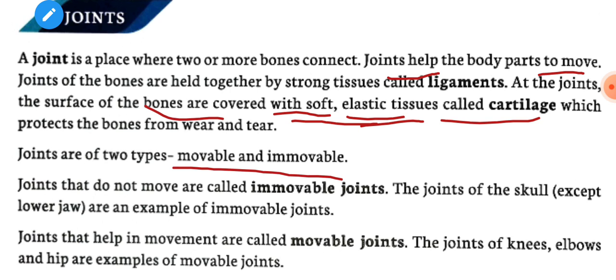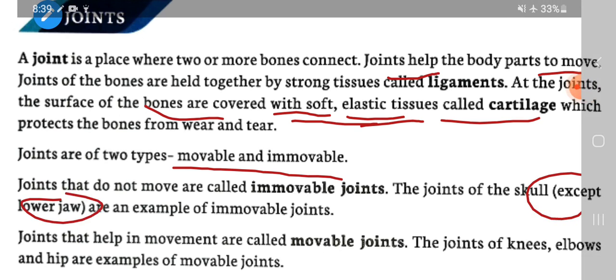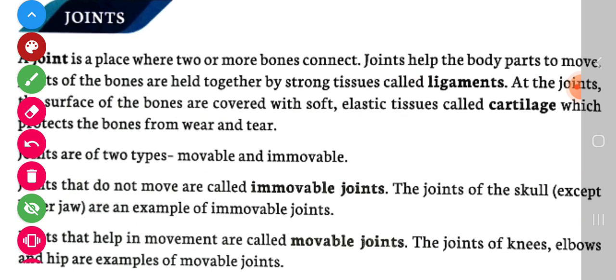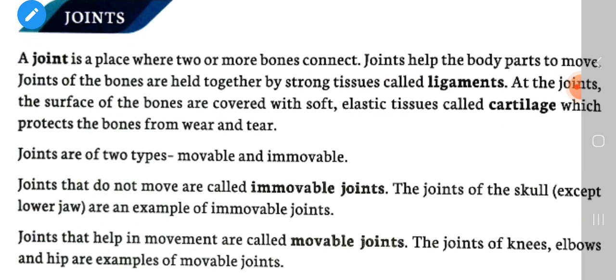Joints that do not move are called immovable joints. The joints of the skull, except the lower jaw, are an example of immovable joints. Joints that help in movement are called movable joints. The joints of knees, elbows, and hip are examples of movable joints.